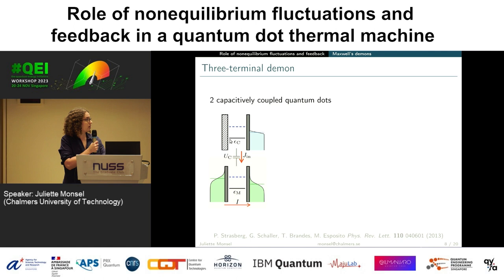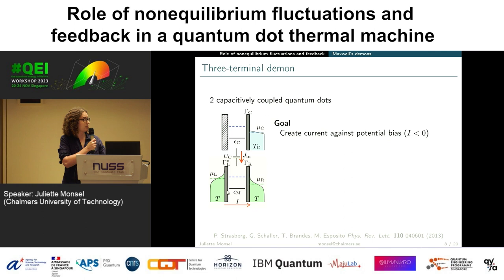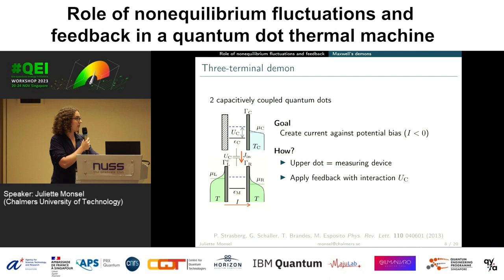Here I have two dots: the top one is going to be the demon and it's coupled to some cold reservoir, and the bottom one is the working substance and it's coupled to two different reservoirs with different chemical potentials. What I want to do is transport electrons against this potential bias to generate electric current. This is possible thanks to the Coulomb repulsion between the two dots — the energy level will change position depending on the occupation of the other dot because of this Coulomb repulsion.